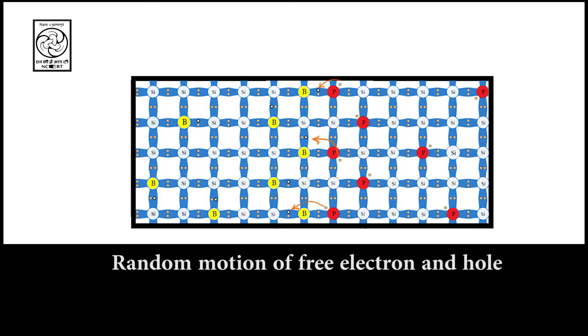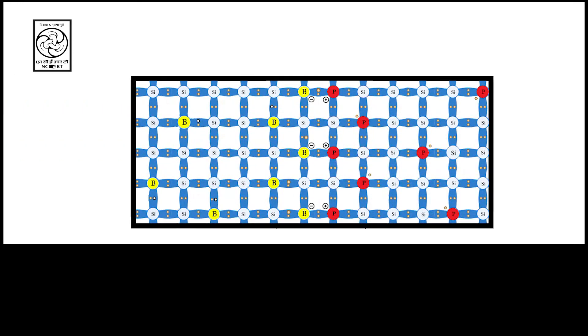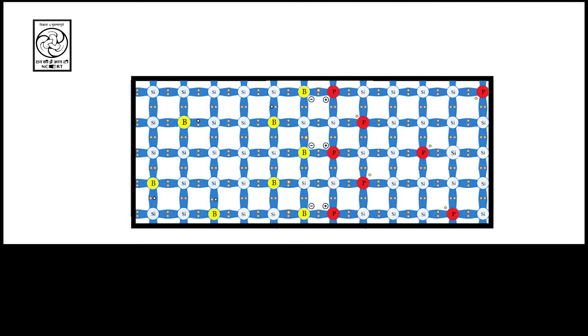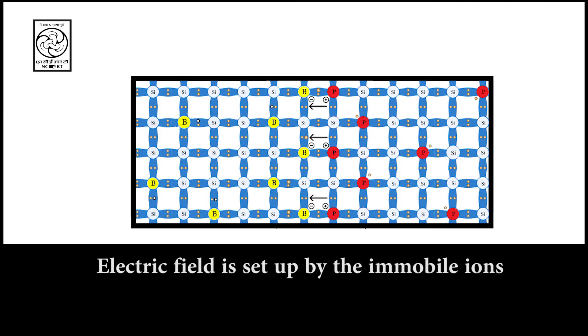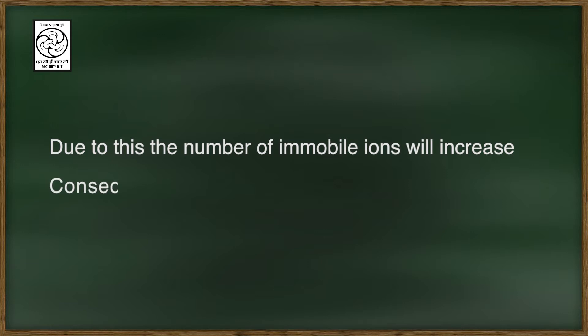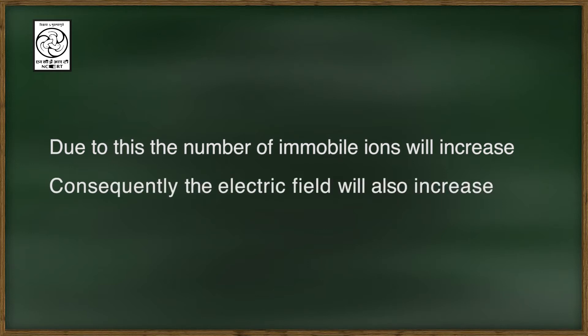These free electrons move randomly and recombine with the hole and make a covalent bond, as you can see on the screen. Due to this, phosphorus atoms become positive ions and boron atoms become negative ions. These ions are immobile. So an electric field is set up in the region. If this electric field is not enough, then some more free electrons move to another hole and recombine with the holes. Due to this, the number of immobile ions will increase. Consequently, the electric field also increases. If this electric field is sufficient to stop the movement of electrons.